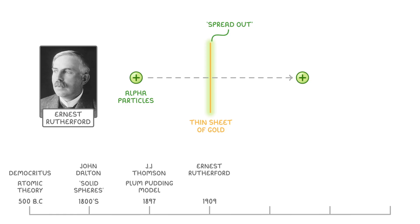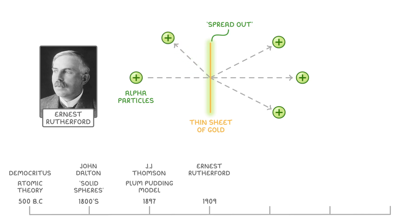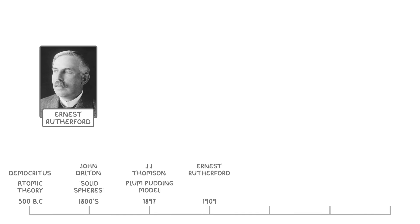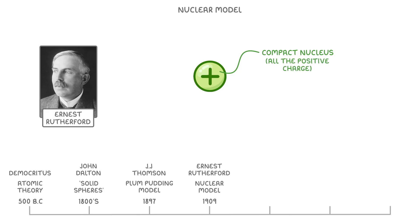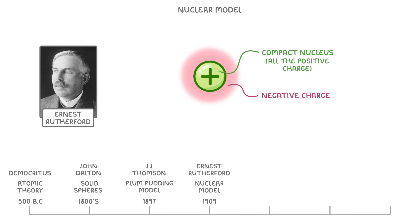Weirdly though, what actually happened was that some of the alpha particles were deflected to the side, and a small number were even deflected back the way they had come, proving JJ's theory wrong. Because of these results, Rutherford suggested his nuclear model, which proposed that instead of a general field of positive charge, there was some sort of compact nucleus which contained all of the positive charge of the atom, and he thought that the negative charge must exist in some sort of cloud around this central nucleus.